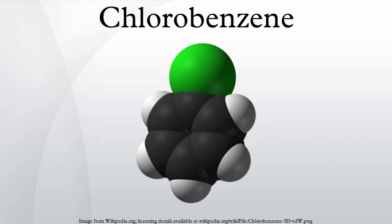Chlorobenzene is an aromatic organic compound with the chemical formula C6H5Cl. This colorless, flammable liquid is a common solvent and a widely used intermediate in the manufacture of other chemicals.